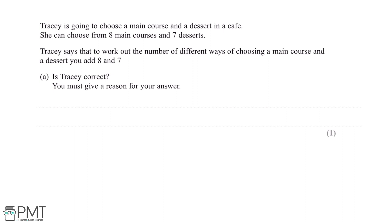So if we think about this question, if there are eight main courses and seven desserts, then if we choose the first main course on the menu, we will still be able to choose between seven desserts.